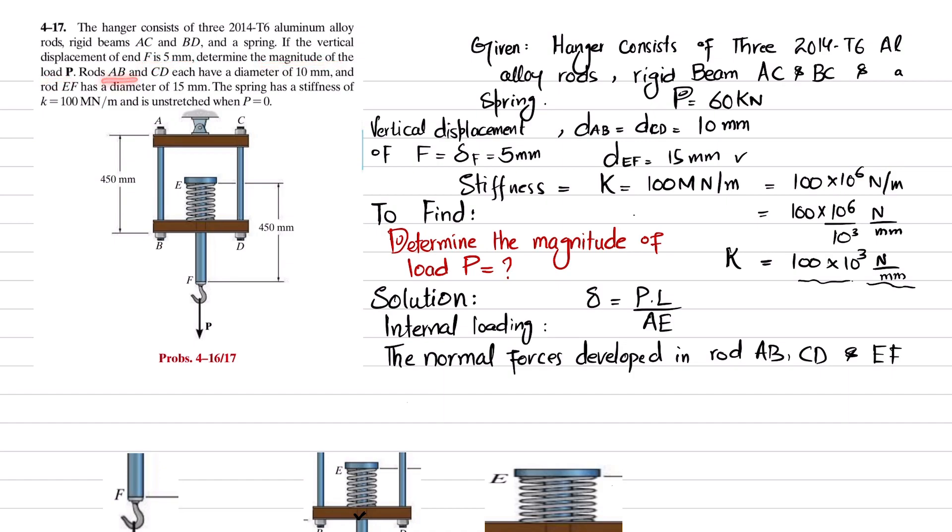Rod AB and CD have the same diameter of 10 millimeters, and rod EF has a diameter of 15 millimeters. The spring has a stiffness of 100 meganewtons per meter and is unstretched when P equals zero. This is the hanger that consists of rods AB, CD, and EF, and two beams AC and BD, and there is a spring.